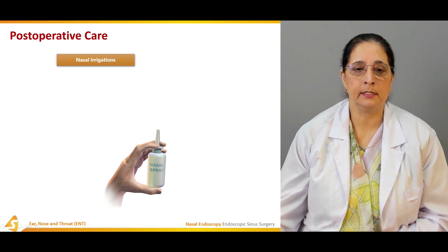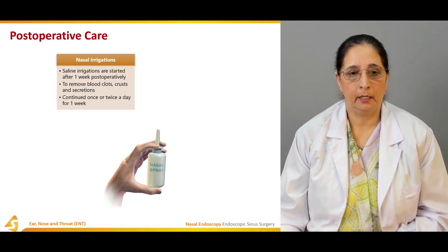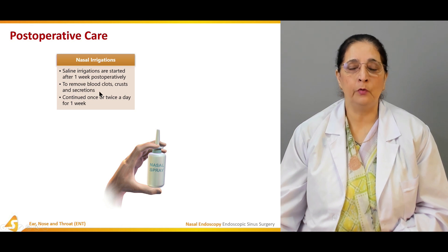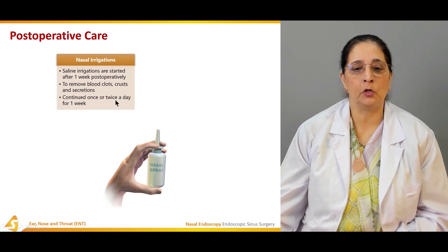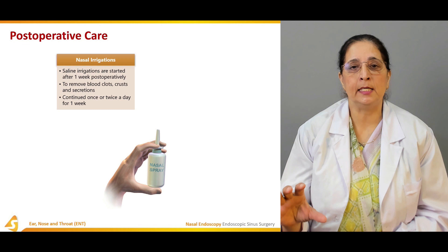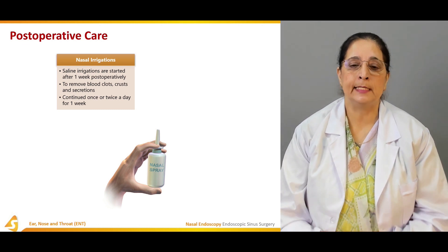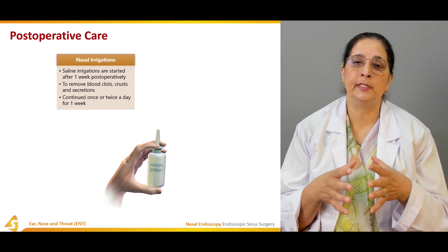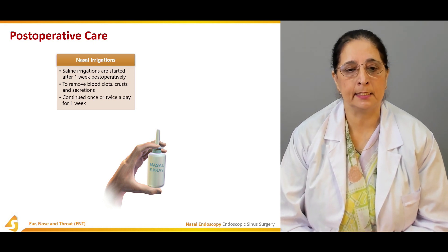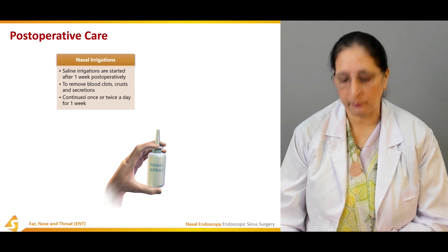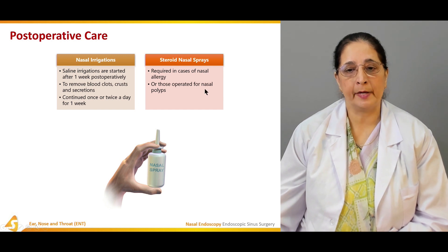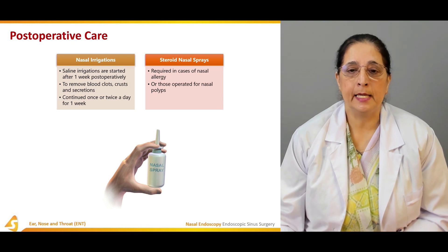Nasal irrigation with saline is started after one week post-operatively to remove any clots, crusts, and secretions, and is continued once or twice a day for one week. After surgery, if there are crusts, blood clots, or secretions, these can be removed by nasal saline irrigation. Steroid nasal sprays are required in cases of nasal allergies or for patients operated on for nasal polyps.